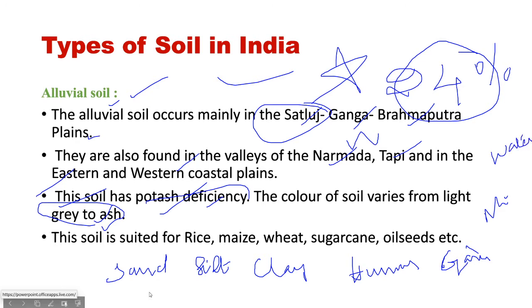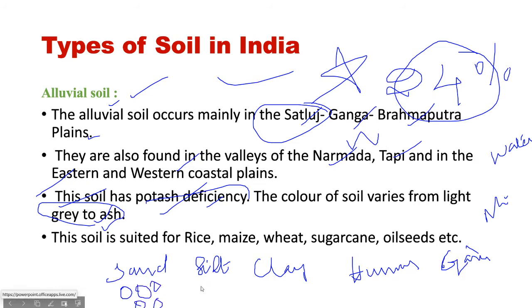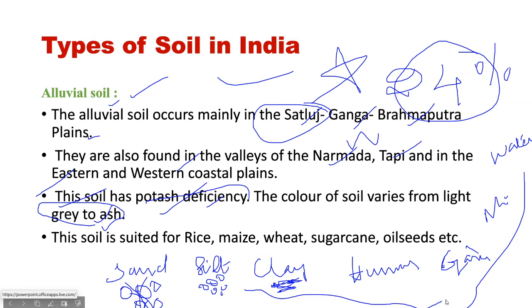Sand has coarse grains. Silt is of medium thickness. Clay has very fine particles. Humus is dead organic matter — dead trees and animals decompose to form humus.